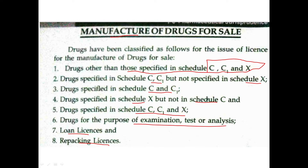There are narcotic drugs in Schedule X. There are biological drugs in Schedule C. C1 includes vitamins and digitalis. There is a common license for all these drugs — that is the first category. In the second category, C, C1, and X can be manufactured together. The third category is C and C1, where C1 is not separately specified. The fourth category is X and C1.